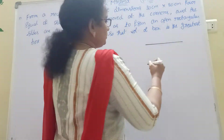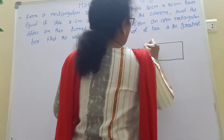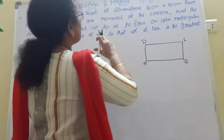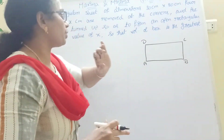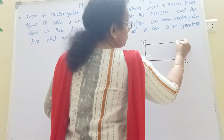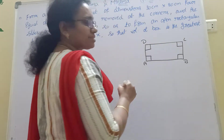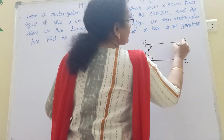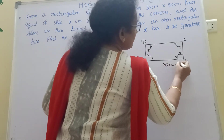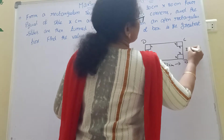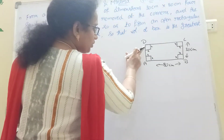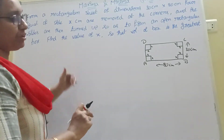First, you draw it. Draw a rectangle — label corners A, B, C, D. Dimensions given: length is 80 cm and width is 30 cm. Four equal squares of side x cm are cut and removed at the corners — so we cut four squares from each corner. The length is 80 cm and the width is 30 cm.